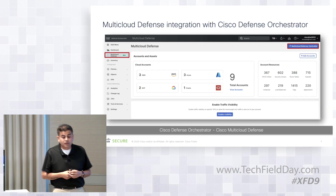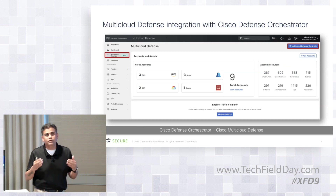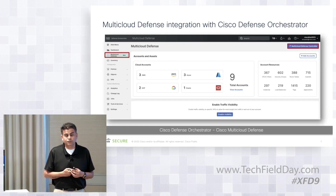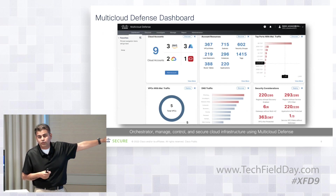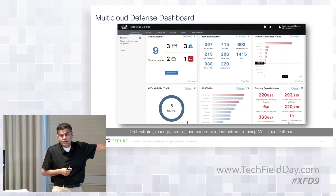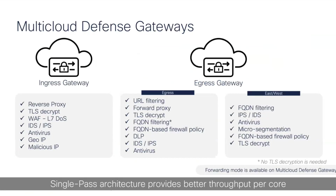This is the landing page of Cisco Defense Orchestrator, or CDO. CDO is our cloud-provided management platform from where you can manage ASA, FTD, Umbrella, and other options. We have added multi-cloud defense as part of CDO as well. On this dashboard, you can see information about your cloud accounts, cloud resources, top ports with malware traffic, and security considerations. This dashboard gives you complete information about what is happening in your infrastructure, no matter where your applications are deployed — AWS, GCP, or OCI.